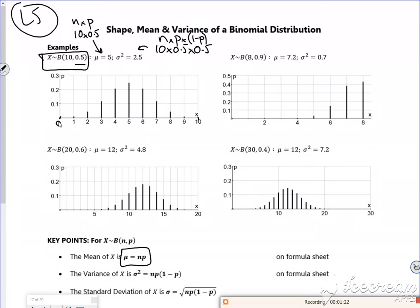Right, so let's have a quick look at this then. So looking at this graph, the 0.9 pushes everything over to the right, so everything's gone over there. But you can see that the 7.2 is 8 times 0.9 and then that one will be 8 times 0.9 times 0.1.